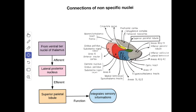Next we'll see the connections of the lateral posterior nucleus. From the ventral tier nuclei of the thalamus the afferent goes to the lateral posterior nucleus. From here the efferent goes to the superior parietal lobule, and the function is it integrates the sensory information.